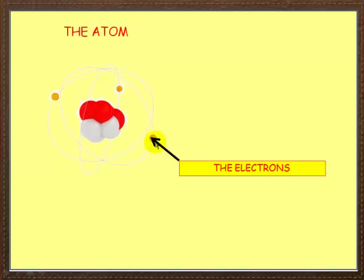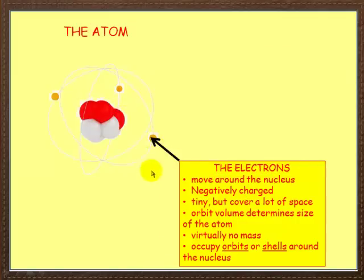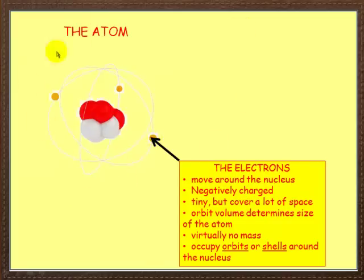On the outside, we've got what are called electrons. Some facts about electrons: they move around the nucleus, they are negatively charged. So if protons are positive, electrons are negative. Now compared to the protons and neutrons, electrons are tiny. But because they're whizzing around, they cover a lot of space. And this orbit volume actually determines the size of the atom.